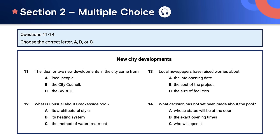Moving on to questions 25 to 30 — note the words due to in question 25, main reason in 26, and why in 28. These questions are looking for cause and effect relationships. Questions 27 and 29 are both looking at superlatives — most important and greatest influence. And finally, 30 is looking for a criticism or a reason people disagree. These are common question types in section three. It will require you to follow ideas more carefully than in earlier sections of the test.